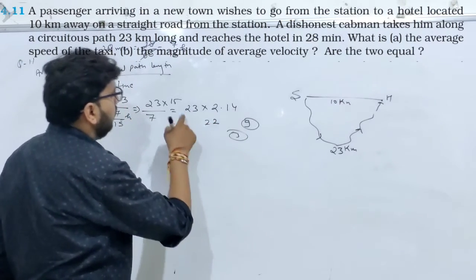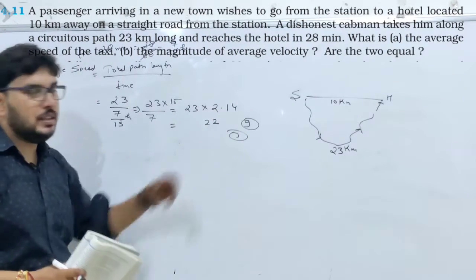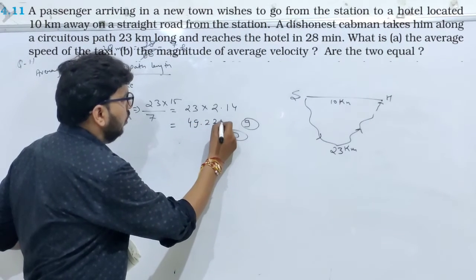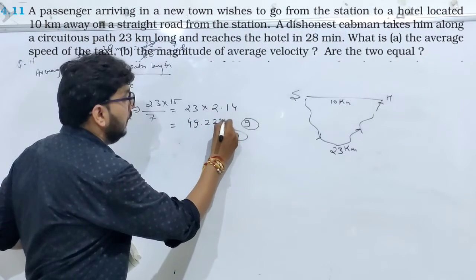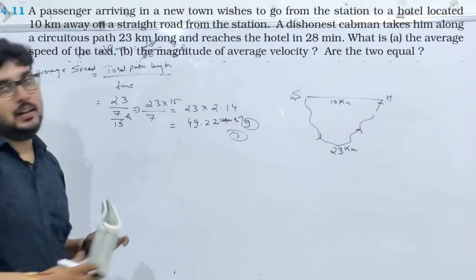32, 3 carry, 23, 2 जा, 46 plus 3, 49. So 49.22 kilometers per hour. इतनी speed आ गई.